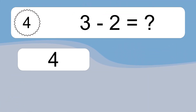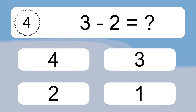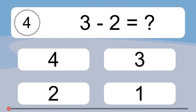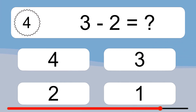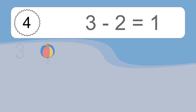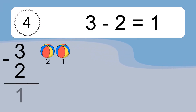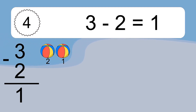3 minus 2 equals what? 3 minus 2 equals 1. Let's count it: 2, 1.